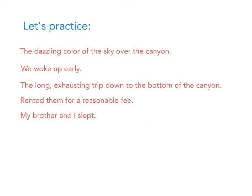Let's do some practice. 'The dazzling color of the sky over the canyon.' Is this a sentence or a sentence fragment? It is a sentence fragment because it does not have a predicate or a verb.